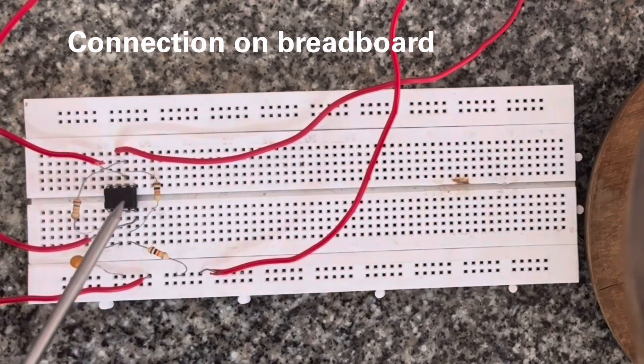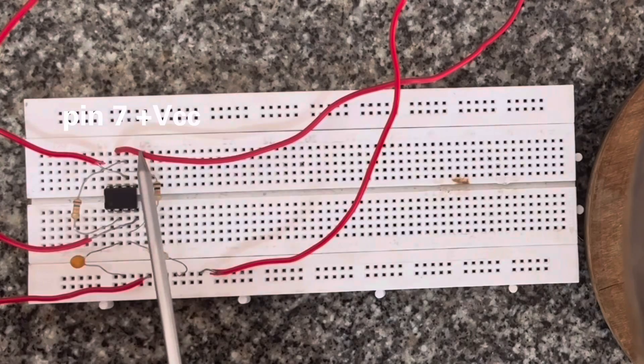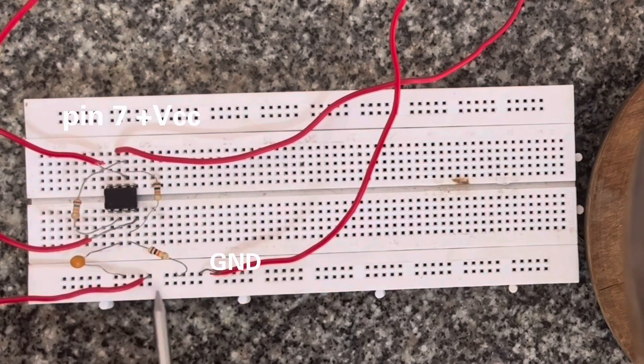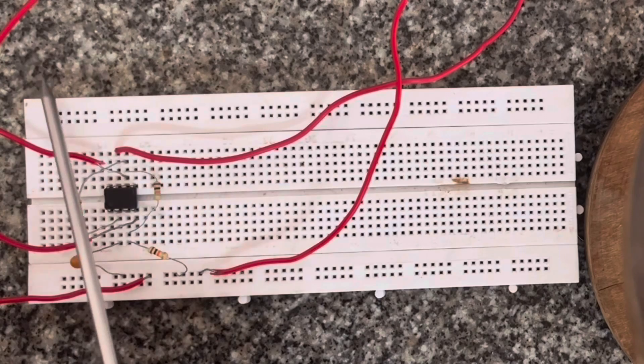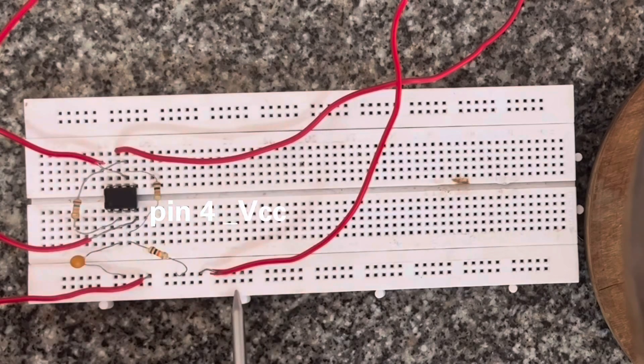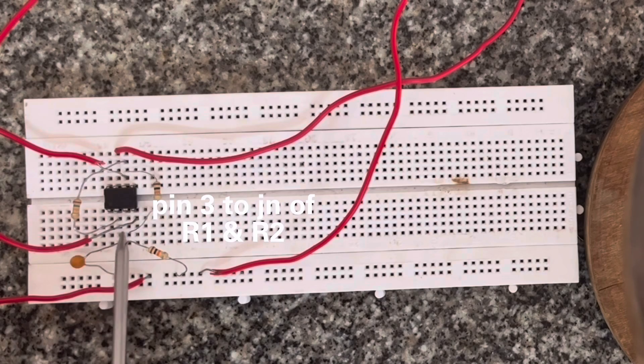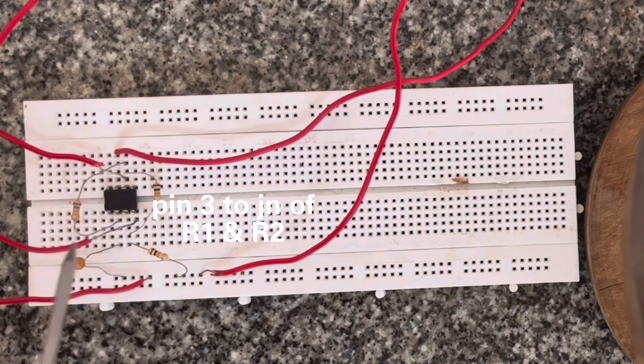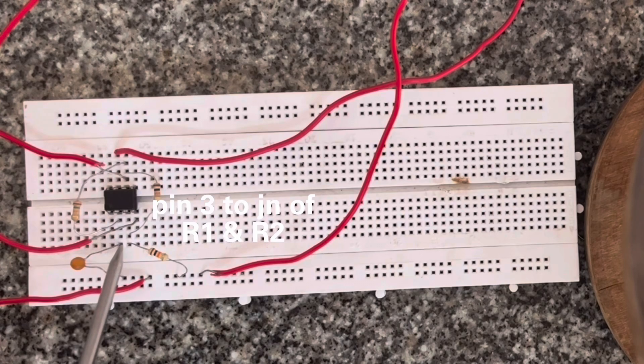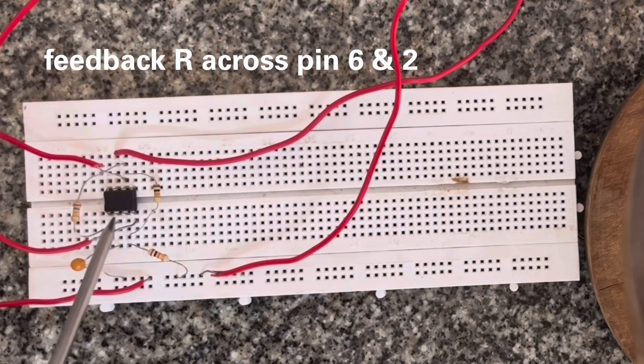This is the circuit connection. Pin 4 is minus VCC, pin 7 is plus VCC. This is the ground. Pin 3 has the two resistors, one resistance to pin 6 and one to ground. Pin 2 has the capacitor to ground. That is the feedback to pin 6.